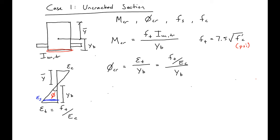So our stress in the steel is just equal to ES times epsilon S, which in this case is equal to phi cracking times Y1, which is the distance between the centroid and the center of our steel.